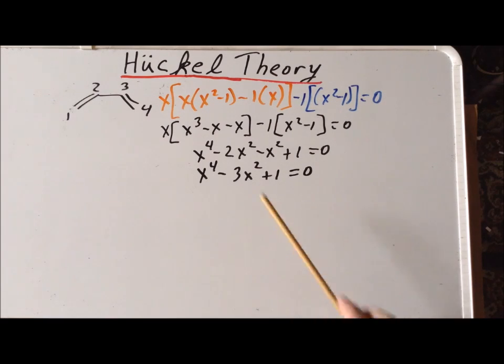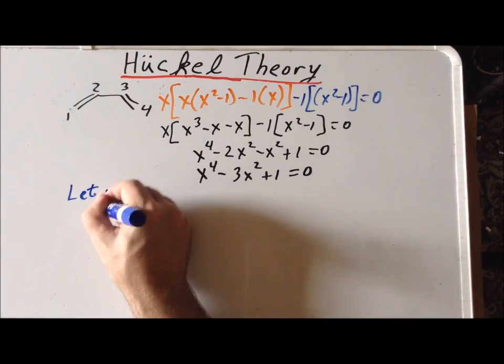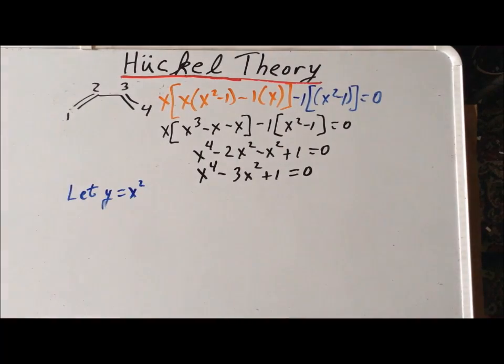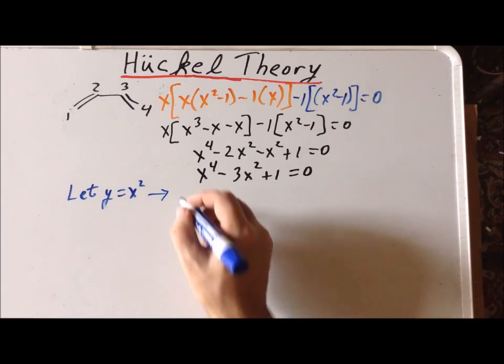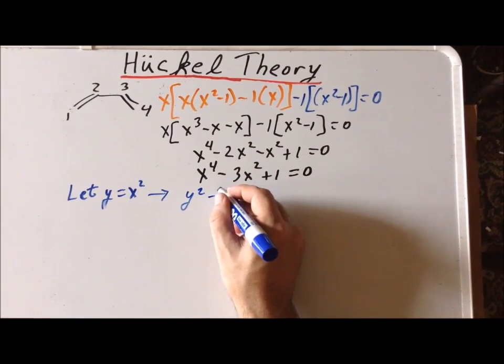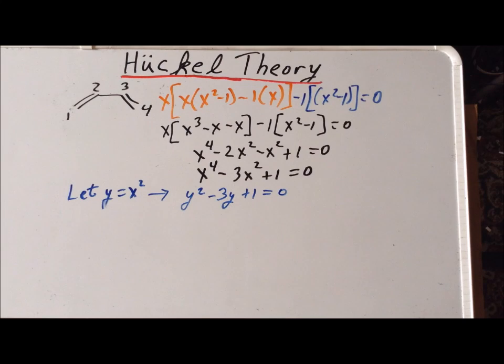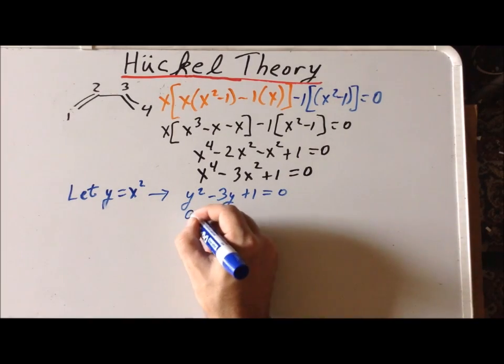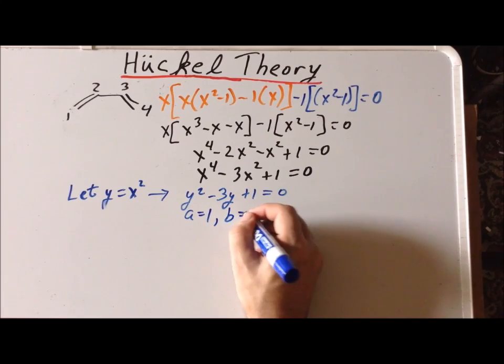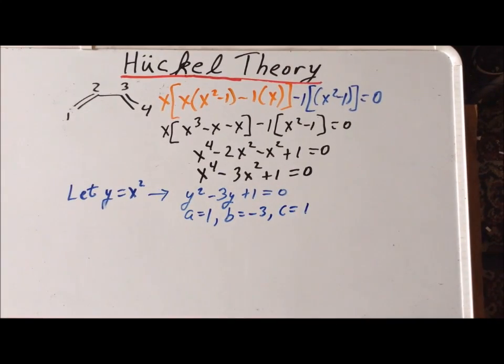There are several techniques to solve this type of a quartic equation, but one technique that might be useful is to notice that we only have even powers of x. So, that suggests the following substitution, that we can let y equal x squared. If we make this substitution, it transforms our equation to y squared minus 3y plus 1 equals 0. And we notice that now we have a quadratic equation, and it can be solved by using the quadratic formula. We notice that a is equal to 1, b is equal to minus 3, and c is equal to positive 1.